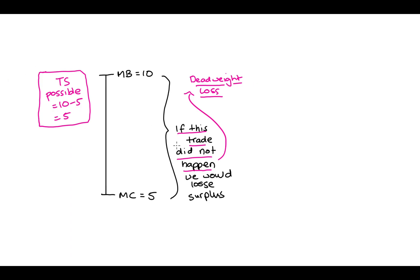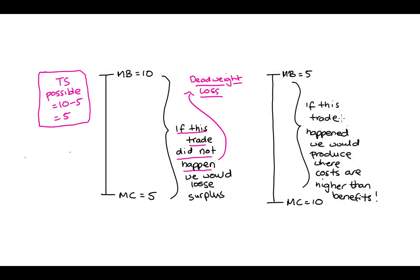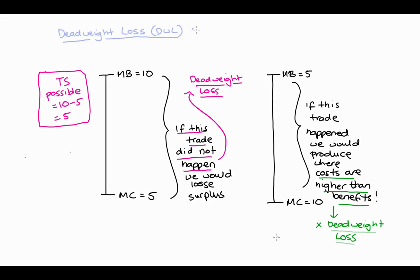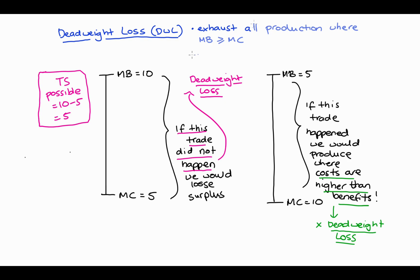Alternatively, imagine if the numbers were reversed — the marginal benefit of consumption was $5 and the marginal cost was $10 — but somehow trade still happened, so we traded even when cost was higher than benefit. This would also create deadweight loss and allocative inefficiency, because we're producing even when the costs are higher than the benefits. That's not a great outcome when thinking about how to allocate our scarce resources.